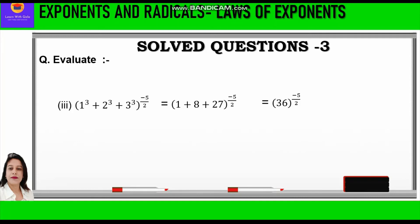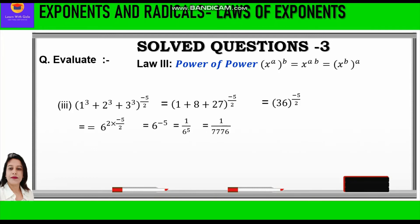So we write 36 raised to power minus 5 by 2. Now 36 is 6 squared, so we write 6 squared into minus 5 by 2. The 2 and 2 cancel by law 3 — power of power — and we get 6 raised to power minus 5. We apply the sixth law — the negative exponent — and convert to positive by reciprocating the base 6, giving 1 upon 6 raised to power 5, which equals 1 upon 7776.